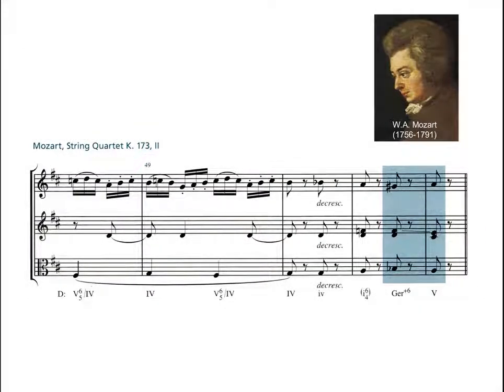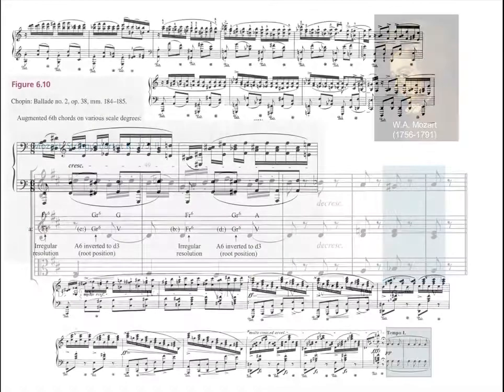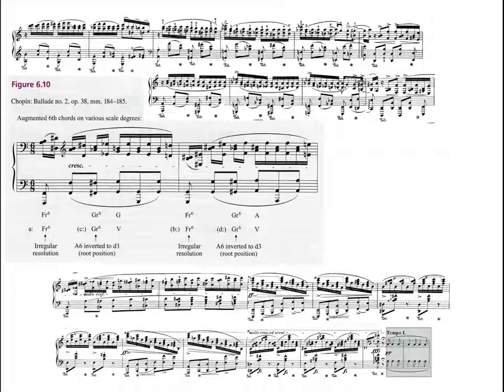The usual resolution of an augmented sixth is to five, or one-six-four to five. When the German sixth moves directly to the five, parallel fifths are apt to result. Because the ear is distracted by the resolution of the interval of the augmented sixth, the parallels are not so objectionable, and they may occasionally be encountered — as in this Mozart example. Figure 6.10 shows a sequence of two measures which have irregular resolutions of augmented sixth chords; this type of unexpected progression frequently signals a delayed resolution. This passage goes by so quickly you may hear it more polyphonically than harmonically.